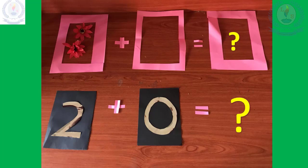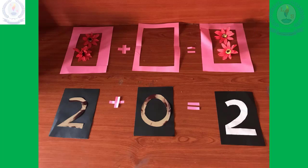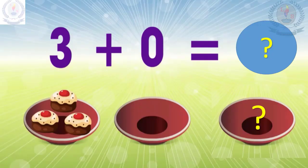Let's see what happens to zero when it is added to any number. There are two flowers in the first box, and then you can see the plus sign. The second box is empty — it means no flowers, or zero flowers in the second box. How many flowers altogether? There are two flowers altogether. The answer is two. Two plus zero equals two.